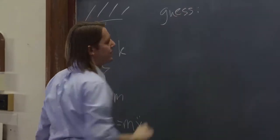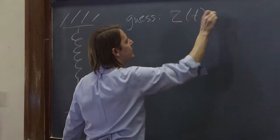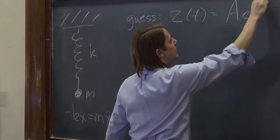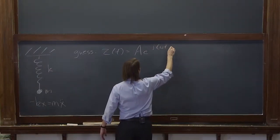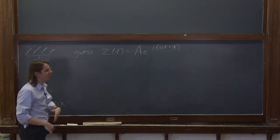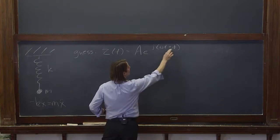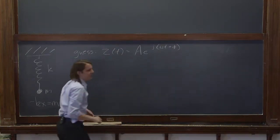So now let's start with the guess, because that's how we solve differential equations. Z, the complex Z, as a function of time, is Ae to the j omega t plus phi. Because whenever we guess, we like to put in a lot of constants to make it general. We have what probably looks like an amplitude, a phase, a frequency, et cetera.